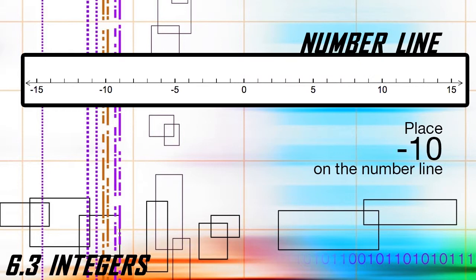What do we do with negative integers? When we're given the problem 'place negative 10 on the number line,' here are the steps for negative integers. Number one, start at zero. Number two, count to the left the number of units until you get to the integer. Number three, place a dot and label that number.